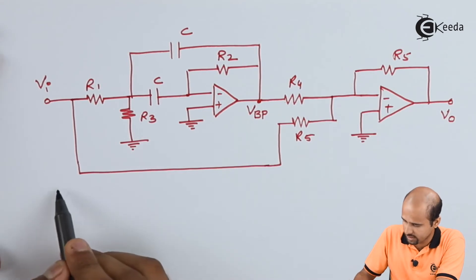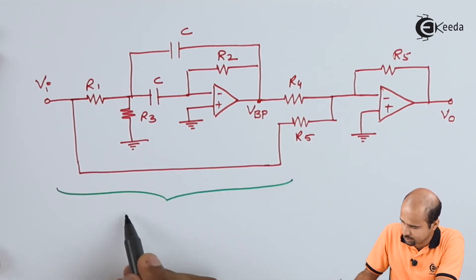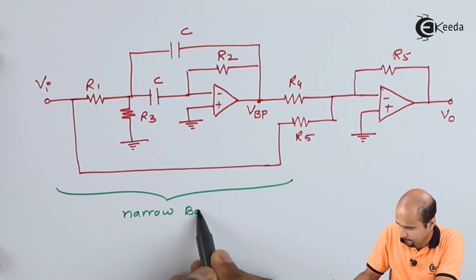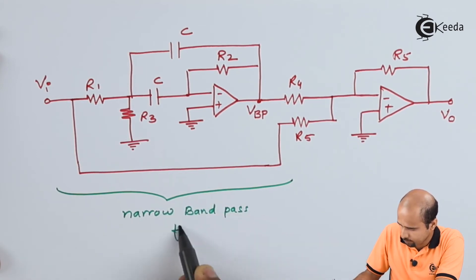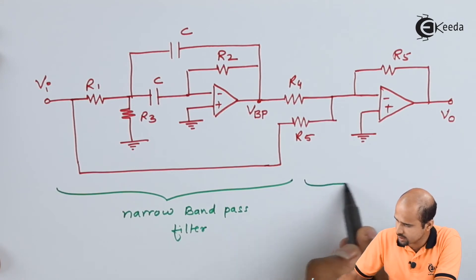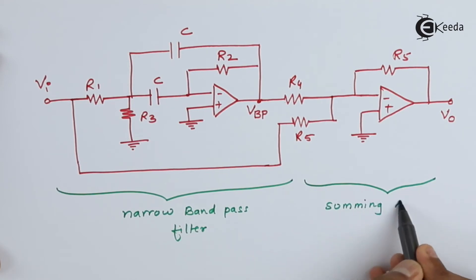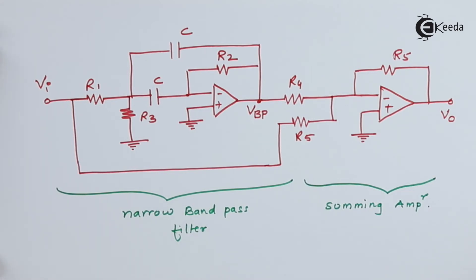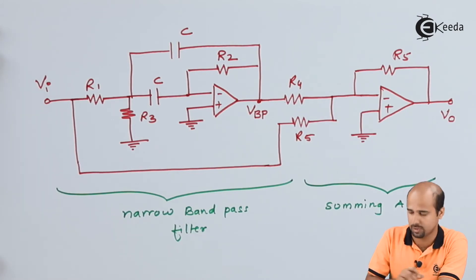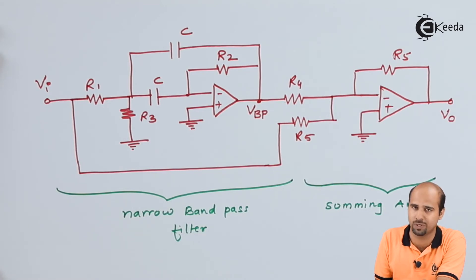Looking at this particular realization, you will see that this portion is your narrow band pass filter and this is your summing amplifier. This is how we generalize the band stop filter. This is one technique using band pass filter and subtractor, and another technique is by using a parallel network of a high pass filter and a low pass filter.